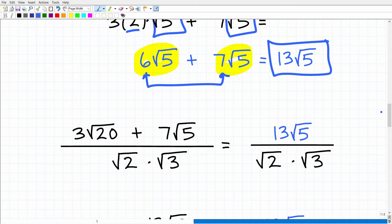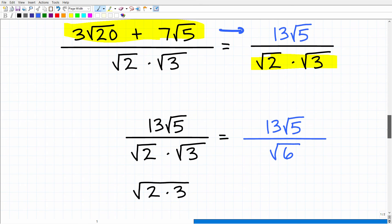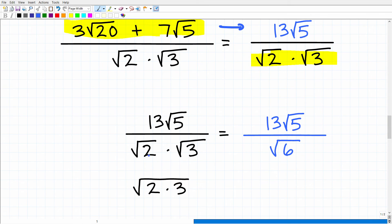All right, so here is our problem. Again, we just worked on simplifying the numerator. That is 13 square root of 5. And now we have square root of 2 times the square root of 3 in the denominator. Okay, so this is pretty easy. The square root of 2 times the square root of 3. We can write this as the square root of 2 times 3, which, of course, is the square root of 6.